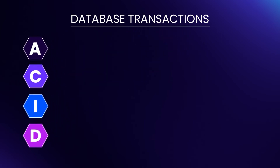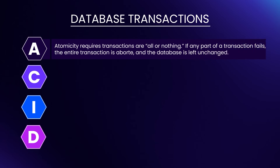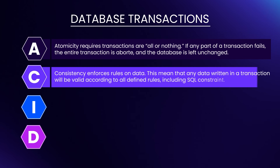When someone says ACID guarantees, they're talking about four promises. First, a transaction has to be atomic, meaning that all parts of a transaction happen, or none. Second, they have to be consistent, which in this context means the transaction has to respect any rules imposed on the database, like foreign key constraints, and move from one consistent state to another with no inconsistent states visible to any readers at any time.